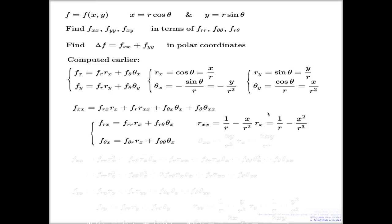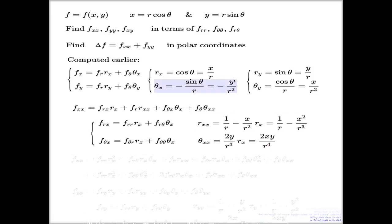For theta double x: the same computation — I use the expression for theta sub x and differentiate by x again. y is a constant, so we ignore it. We have 1 over r squared, which is a power function, so differentiating gives 1 over r cubed. The factor of 2 comes up, and this is a chain rule, which is why r sub x is present as a factor.